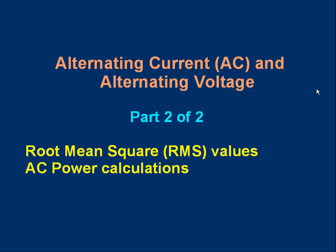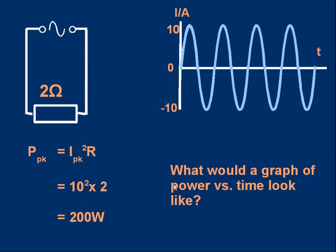Hello, welcome to part two of the lesson on alternating current and voltage. I'm assuming you've seen and understood part one and that we can just continue. In this part we're going to take a look at the root mean square, or RMS, values of voltage and current and how they're used to do power calculations.